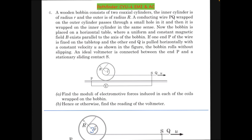The bobbin is placed on a horizontal table where a uniform and constant magnetic field B exists parallel to the axis of the bobbin. If one end P of the wire is fixed on the tabletop and the other end Q is pulled horizontally with constant velocity u as shown in the figure, the bobbin rolls without slipping. An ideal voltmeter is connected between the end P and the stationary sliding contact S.